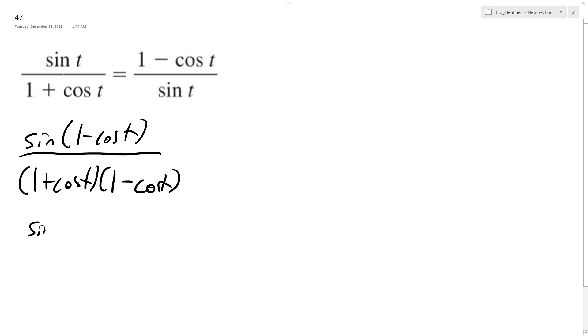So I get sine t times 1 minus cosine t, and on the bottom I get 1 minus cosine squared t. This is a trig identity, it's the same thing as sine squared t.